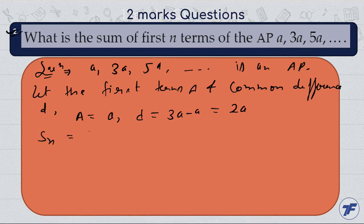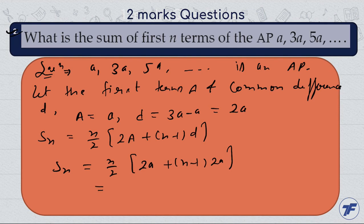We know that sum of nth term of AP is equal to n by 2, 2a plus n minus 1 into d. Now put the value here. So here n by 2, 2a, small a, and n. The value of d is 2a.